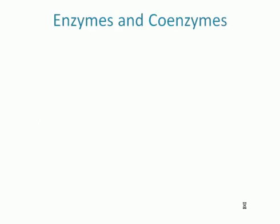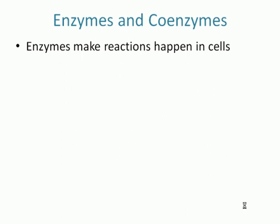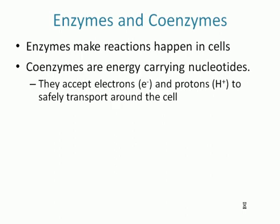The first thing is enzymes and coenzymes. Enzymes make all the reactions happen in cells — we describe those as the machines that make the cell work. Coenzymes are nucleotides, and they're going to be our energy carriers. They carry energy in the form of electrons, but they'll also carry protons.